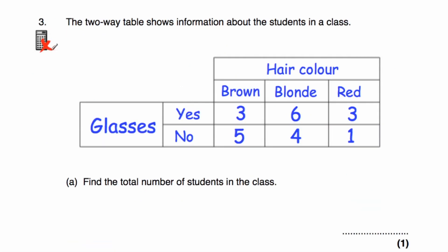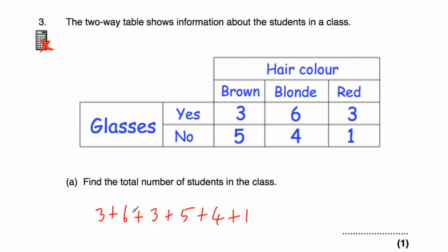Let's have a look at question number three. Question three says the two-way table shows information about the students in a class. We've got their hair colour — brown, blonde or red — and whether they've got glasses or not glasses. Part A says find the total number of students in the class. So three plus six plus three plus five plus four plus one equals 22. There are 22 students in the class.